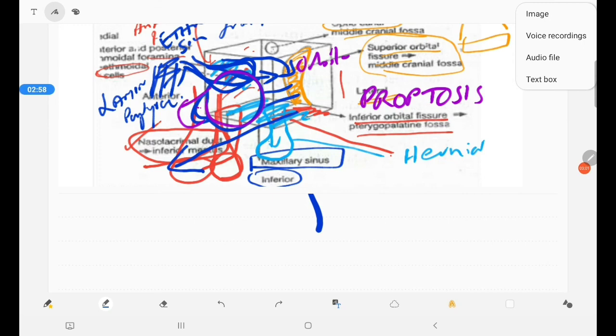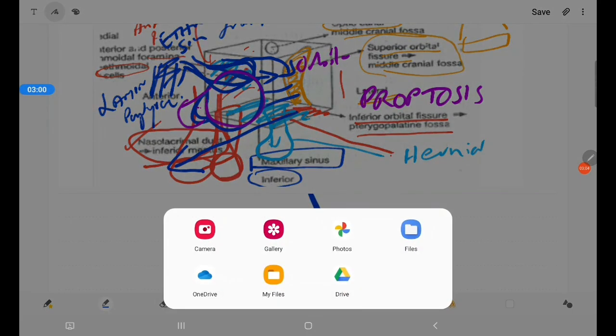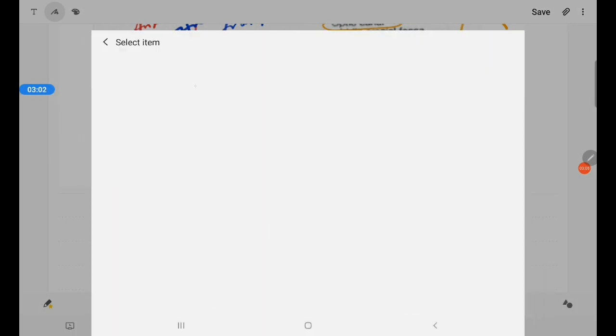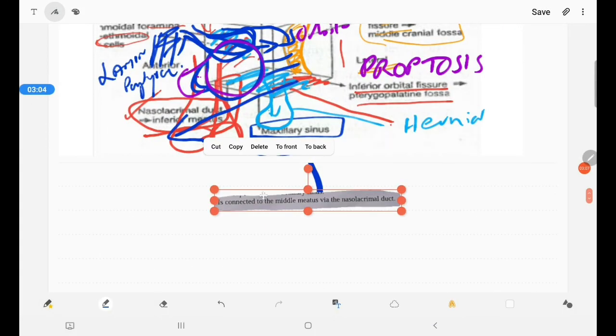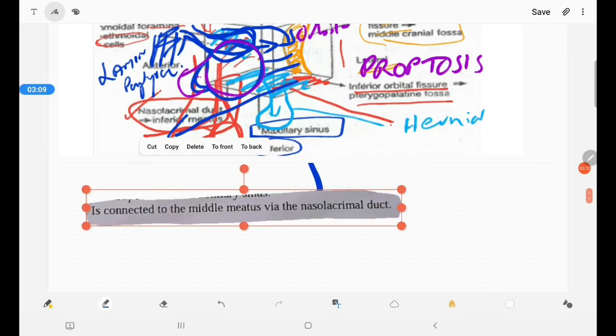I would like to end this session by asking a question related to this. That is, the orbit is connected to the medial meatus via the nasolacrimal duct.